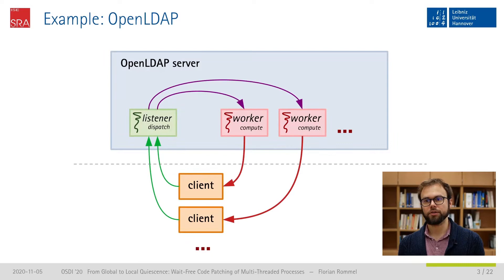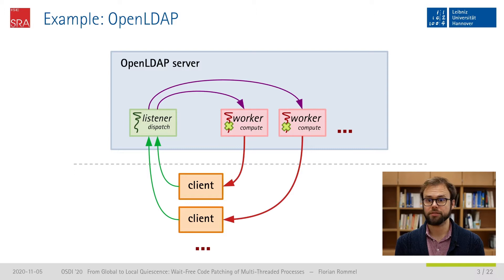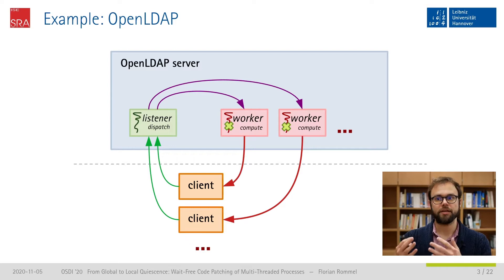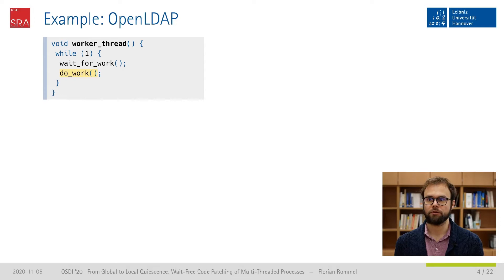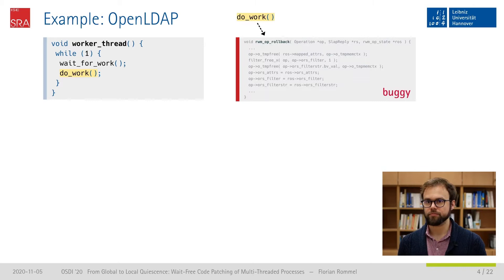Have a look at a typical server application like OpenLDAP for example. It consists of a listener thread that accepts a possibly huge number of client connections, which are then processed by worker threads. Now I want to patch some code that is executed by these workers, and this is where the problems begin. The worker thread code roughly looks like this in OpenLDAP: we wait for a new work package from the listener thread to arrive, and then do the actual processing in the DoWork function.